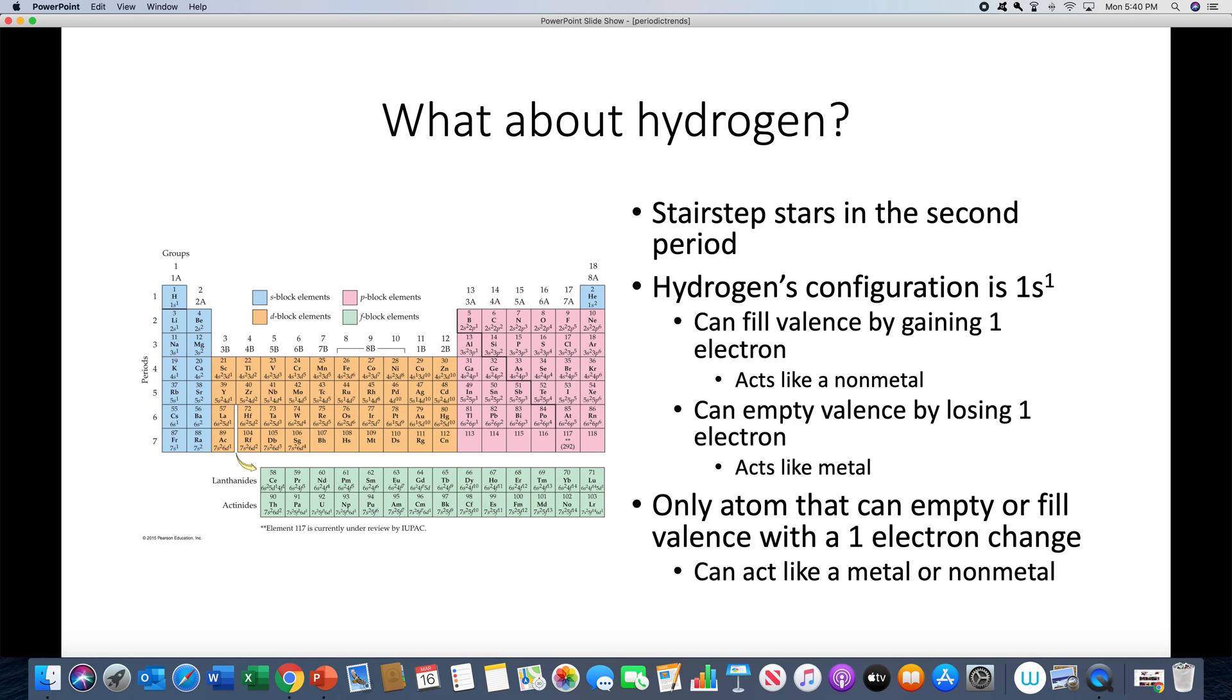And remember, empty valence or a full valence is what the octet rule is about. They're very, very stable. In that case, it's acting like a metal. And for example, when does hydrogen act like a metal? In acids, hydrogen acts like a metal. We may or may not get to acid-base chemistry because of the shortened semester. It's the only atom that can empty or fill its valence with a one electron change. Makes it very interesting.